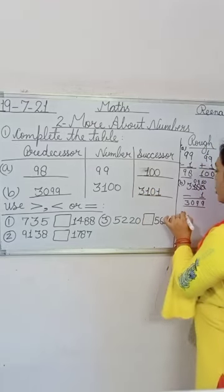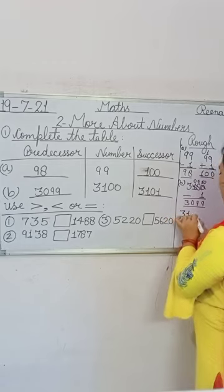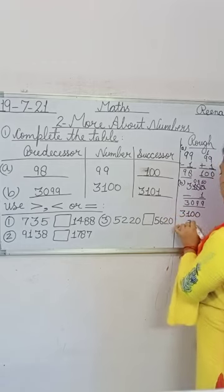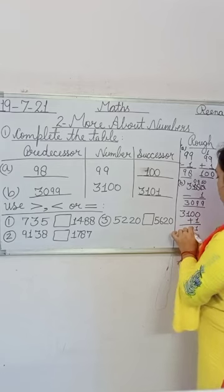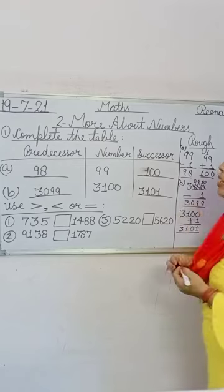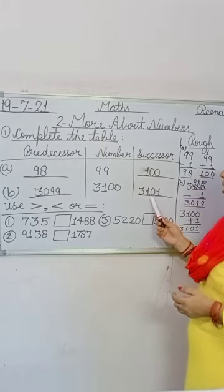How do we get 3101? 3100 plus 1: 0 plus 1 is 1, then 0, then 1, then 3. So our answer is 3101.